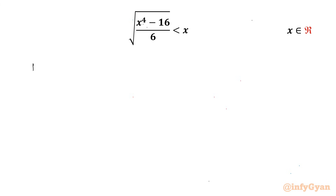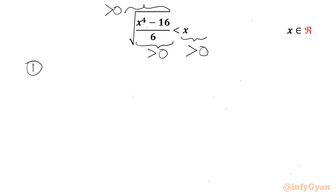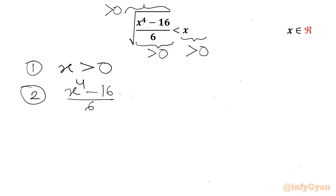Let's get started by writing two conditions. The first condition is about the radicand — it should always be positive. And the right-hand side will also always be positive, since LHS is positive and RHS is greater than LHS, so RHS will be positive. So the first condition is x > 0, and the second condition is (x⁴ minus 16) over 6 > 0.